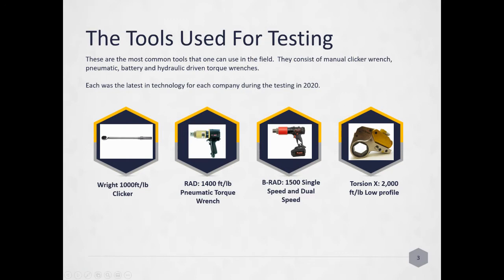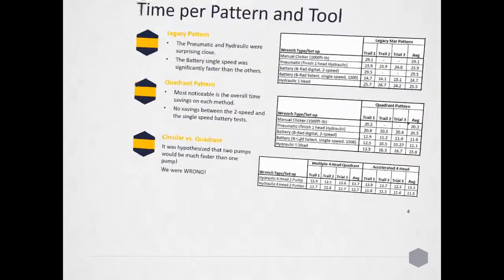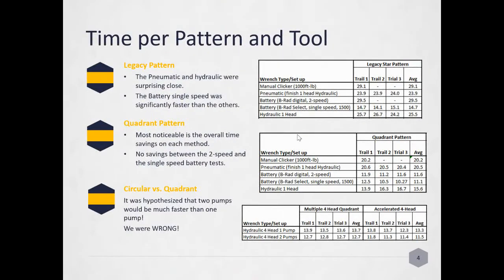Here's what we found out. First we're going to look at the legacy pattern. The pneumatic and hydraulic were surprisingly close, and the battery single speed was significantly faster than others. 30 minutes to do the star pattern on that flange with a 1,000-foot-pound clicker wrench. You are beat up at the end of that. You definitely want to start looking at powered equipment.